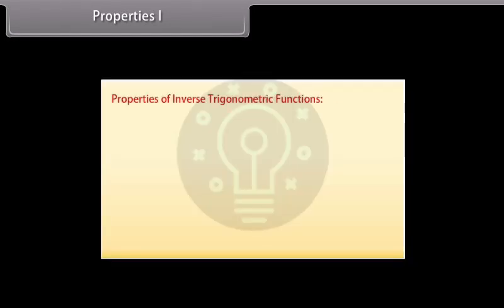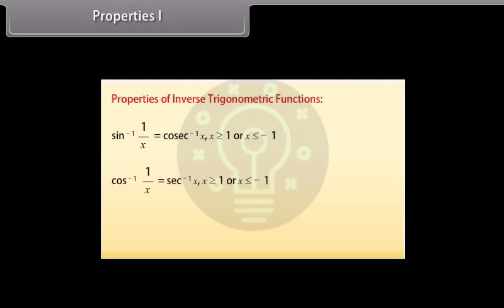Properties 1: sin⁻¹(1/x) = cosec⁻¹ x, where x ≥ 1 or x ≤ -1. cos⁻¹(1/x) = sec⁻¹ x, where x ≥ 1 or x ≤ -1. tan⁻¹(1/x) = cot⁻¹ x, where x > 0.